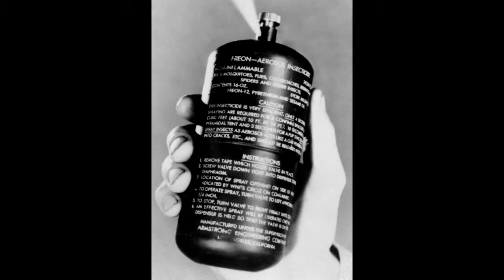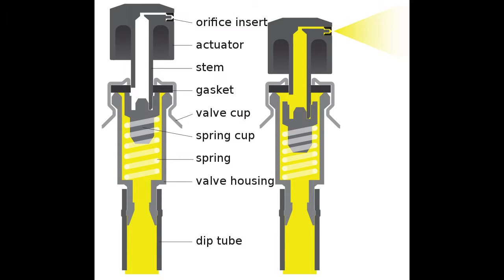Outside the can, the droplets of propellant evaporate rapidly, leaving the payload suspended as very fine particles or droplets.